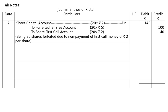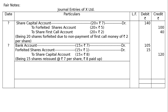After forfeiture, for reissue: Bank Account Dr. 15 × 7 = Rs.105 (reissued at Rs.7 per share). Forfeited Shares Account Dr. 15 × 1 = Rs.15 (discount on reissue, since Rs.8 worth share reissued at Rs.7). To Share Capital Account 15 × 8 = Rs.120 (called up/paid up). Being 15 shares reissued at the rate of Rs.7 per share, Rs.8 paid up.